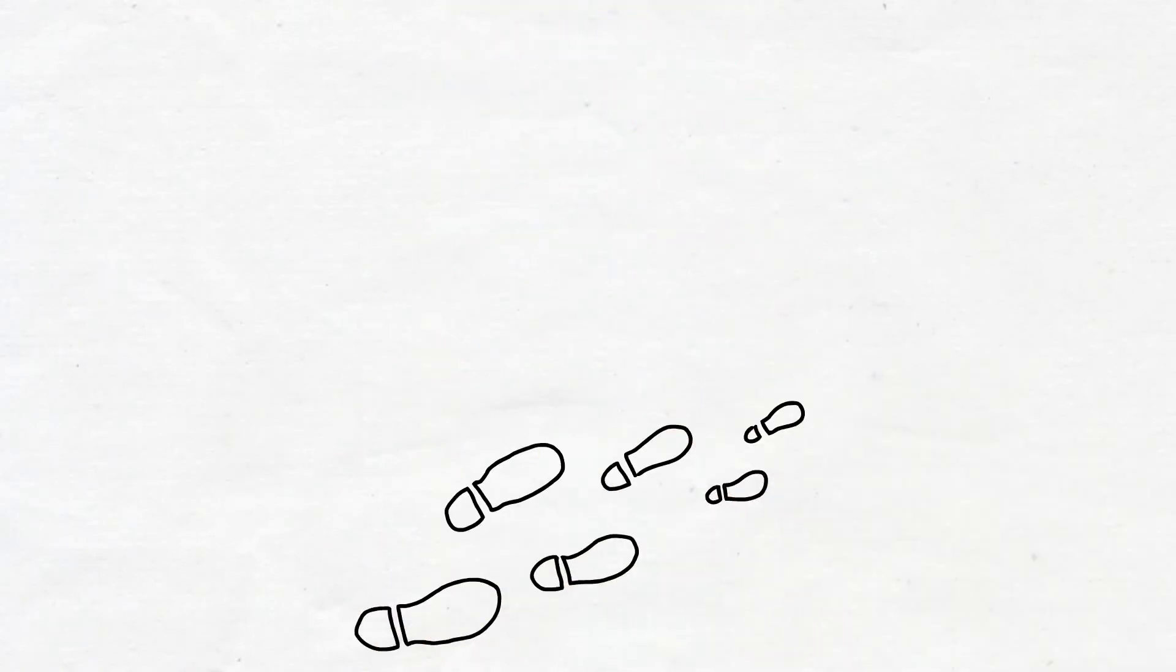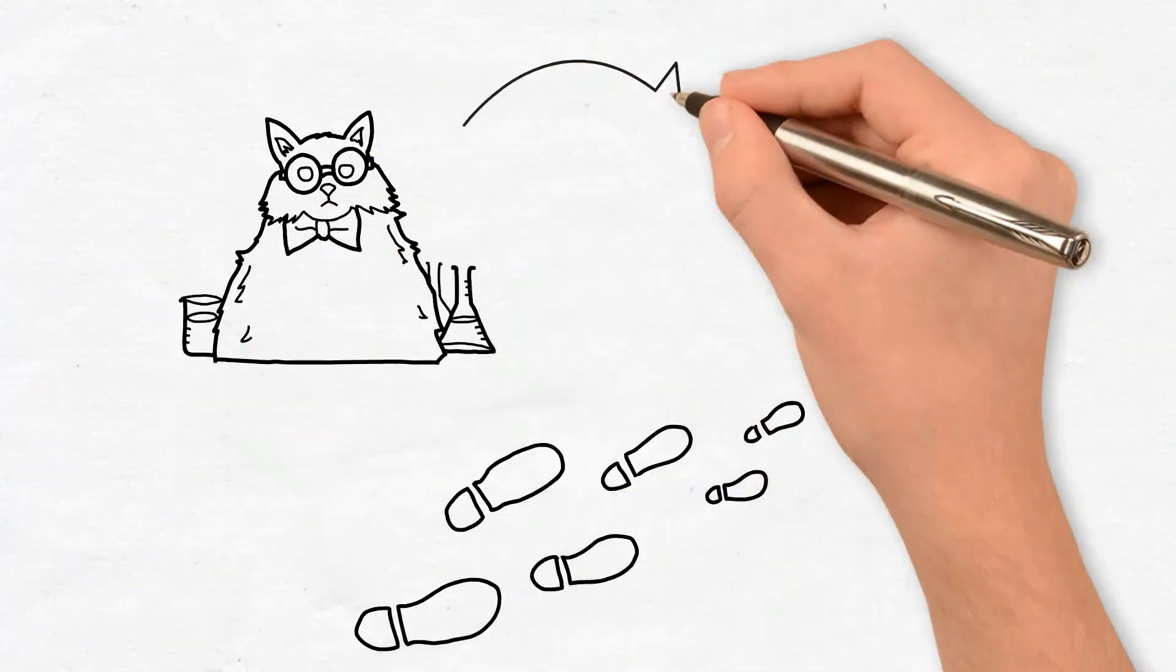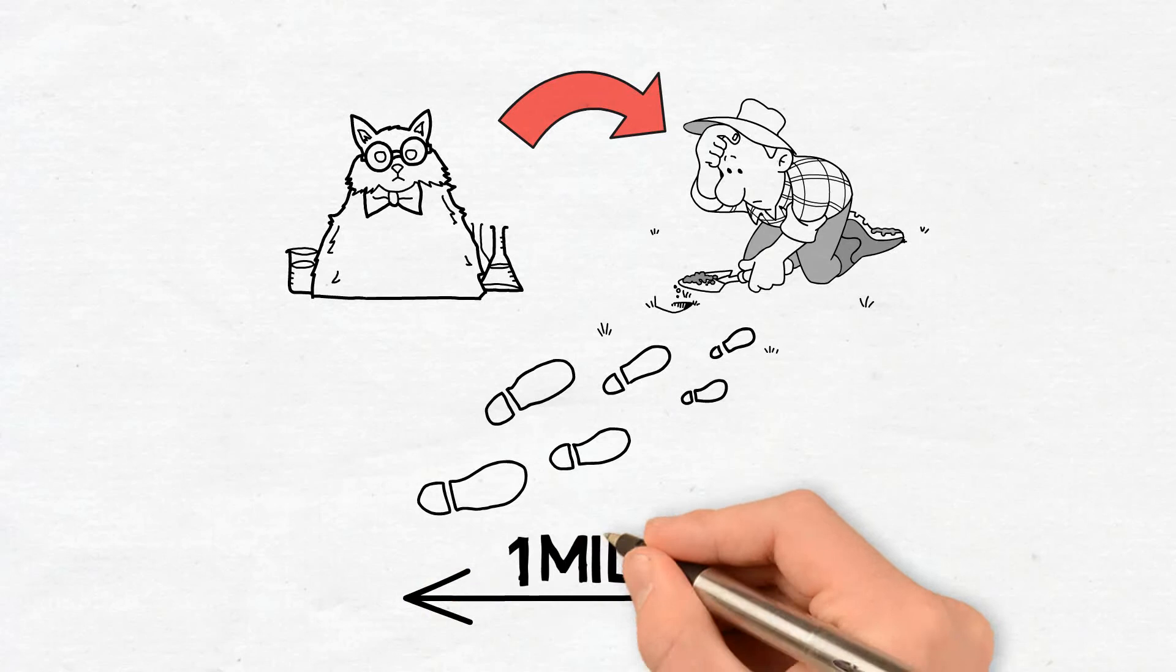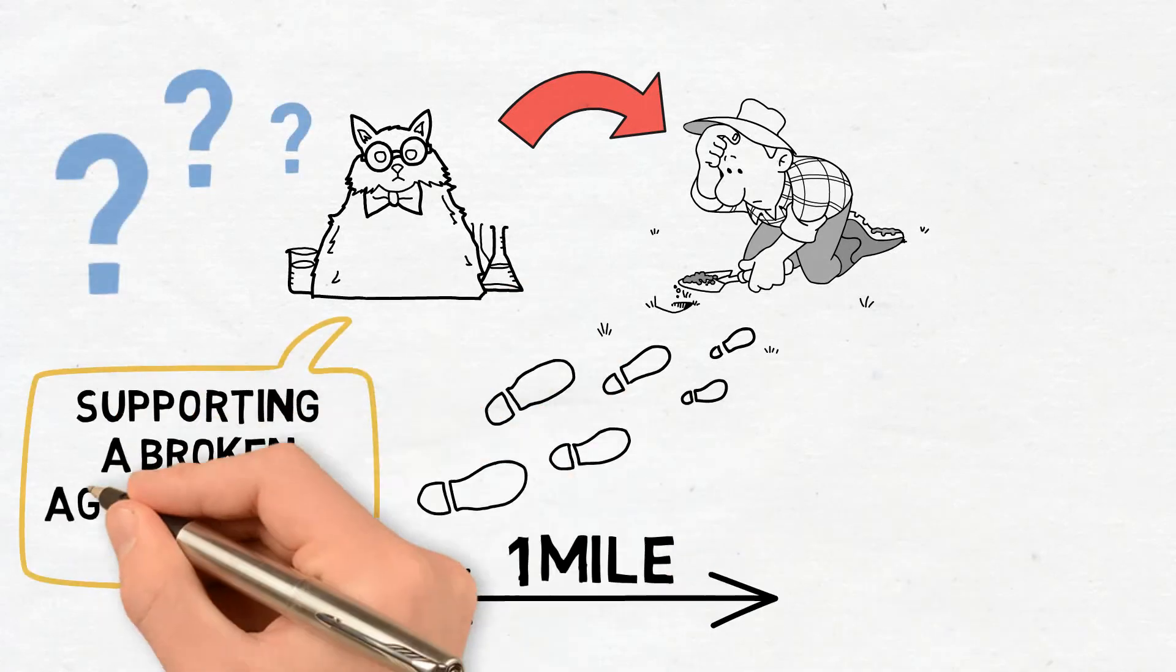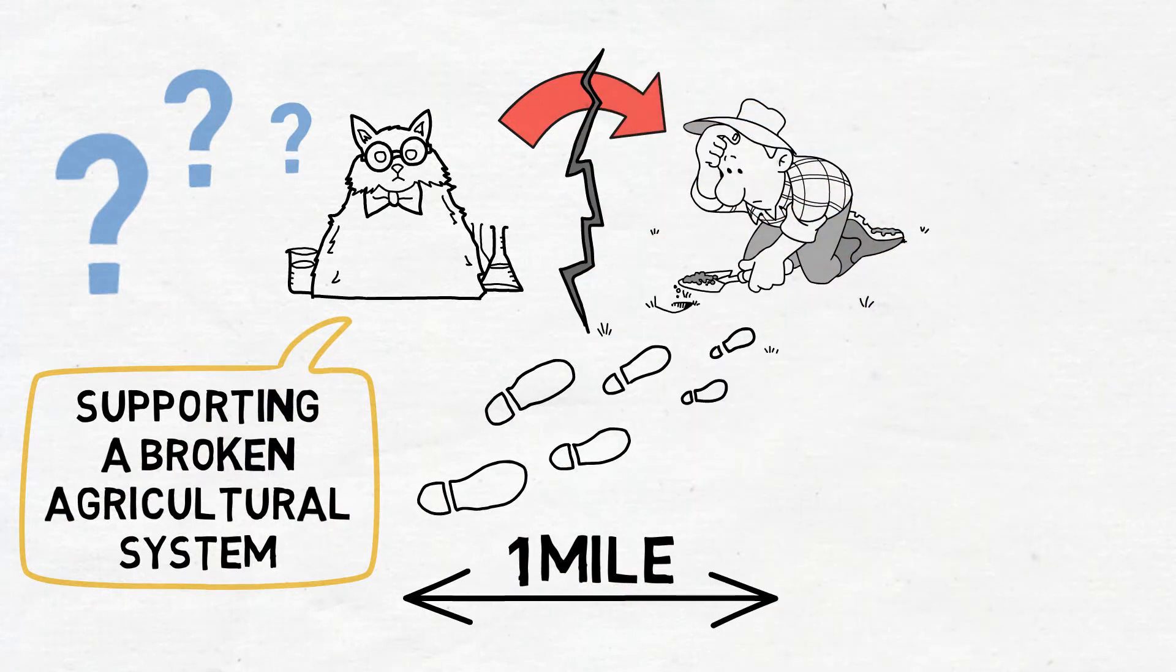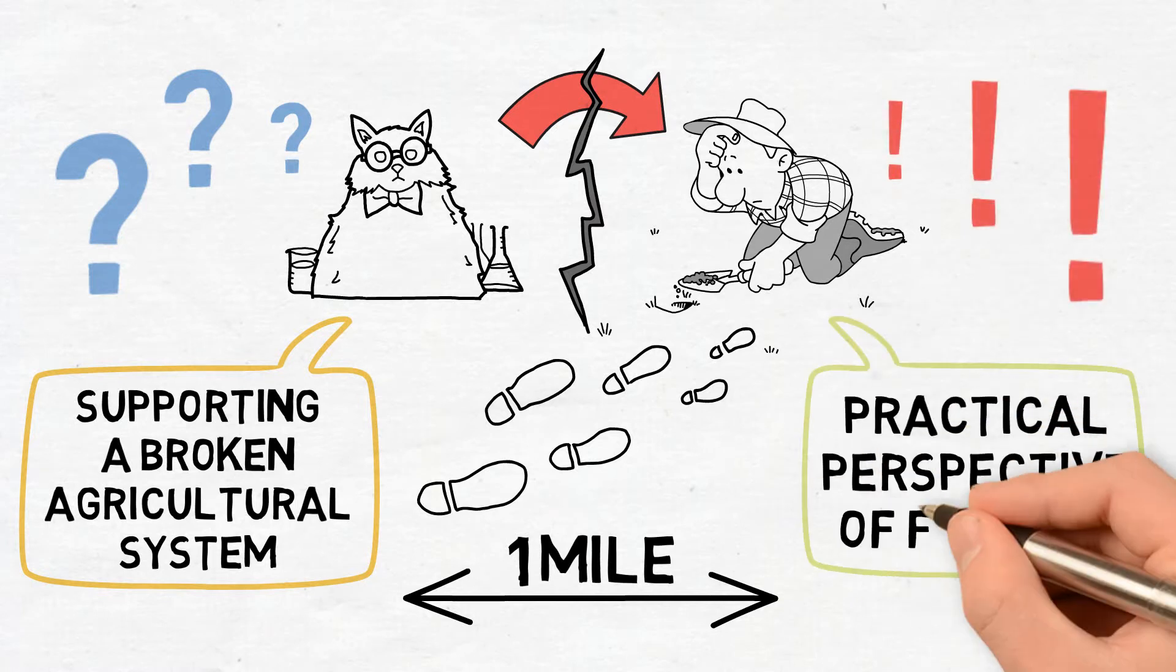So the first step in that process is that the scientists have to become farmers. We have to walk a mile in their shoes, because right now the scientific questions that we're asking that are supporting a broken agricultural system are too often completely disconnected from the kinds of questions that need to be answered from a practical perspective of farming.